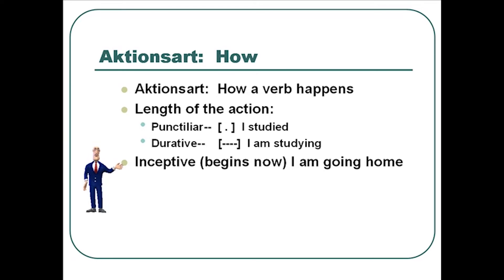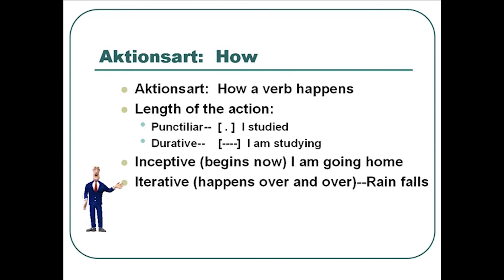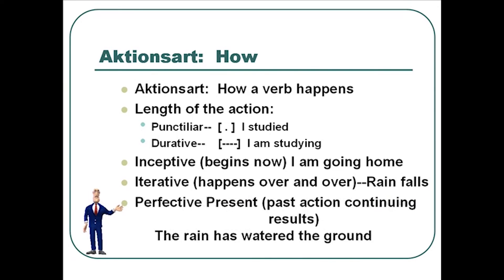There are other means of how the verb happens. For example, an inceptive way — that is, it begins now: 'I am going home,' something that's beginning now. Iterative means something happens over and over again: 'The rain falls over and over.' And then there's the perfective present — it has a past action with continuing results: 'The rain has watered the ground.' So action start tells us how the verb actually acts: whether it's punctiliar, durative, inceptive, iterative, or perfective.